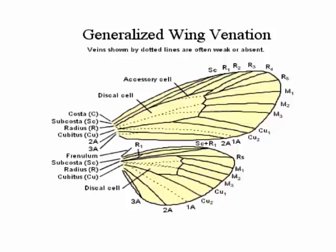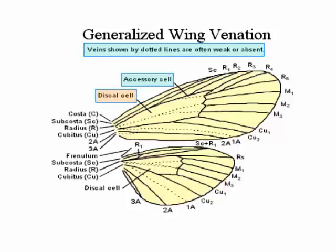There may be a diagram or portrayal of something that you're going to have to interpret. When you see something like this, notice where you have connections and what these different things represent. Also note where you have things that are lacking. There are a great many corresponding representations — the radius represented as R, the subcosta represented as SC. We also see that there are some we don't have: M1, M2, M3.